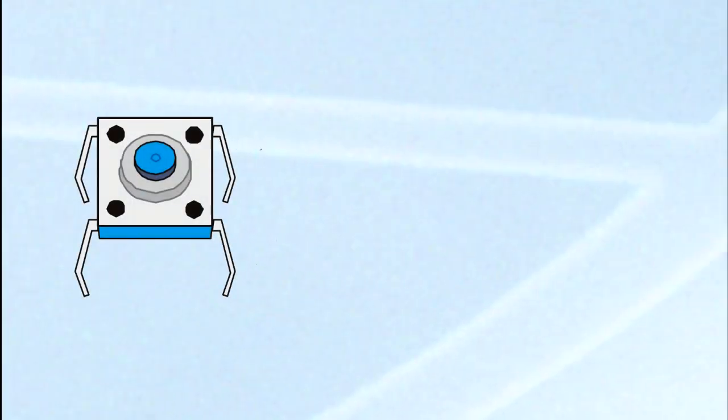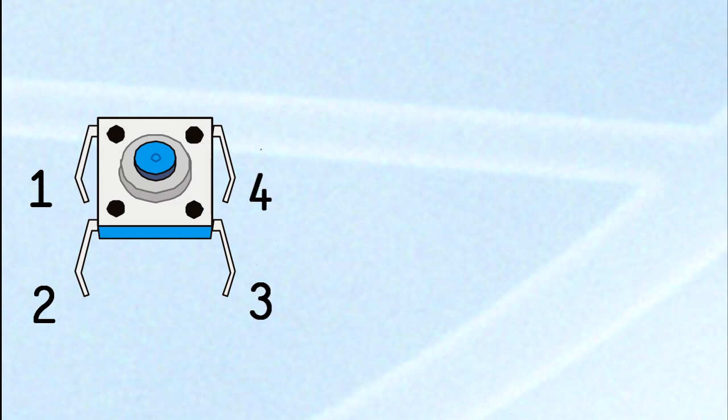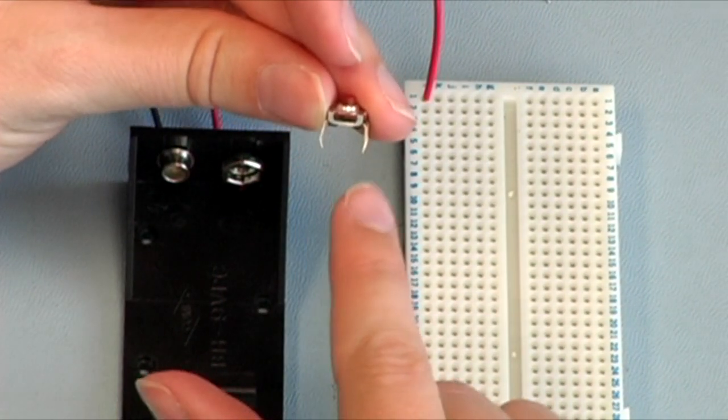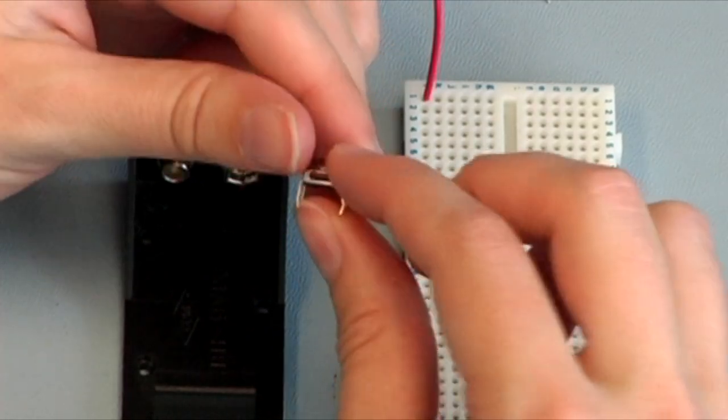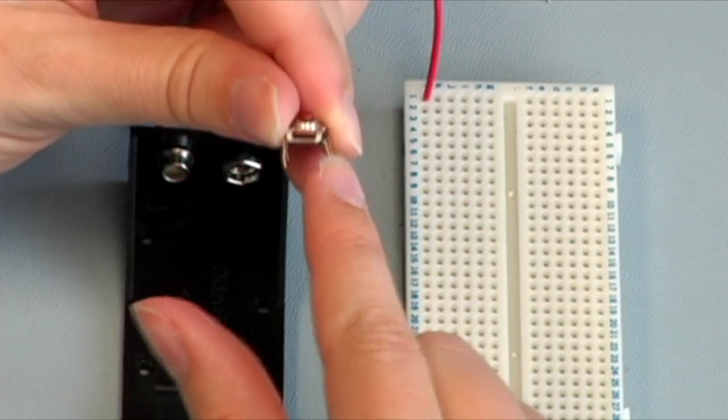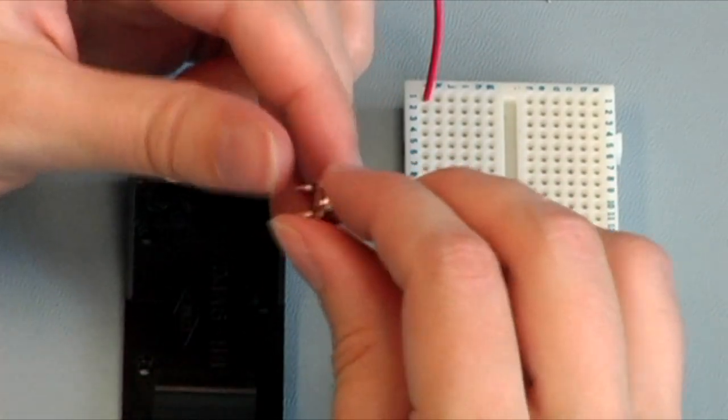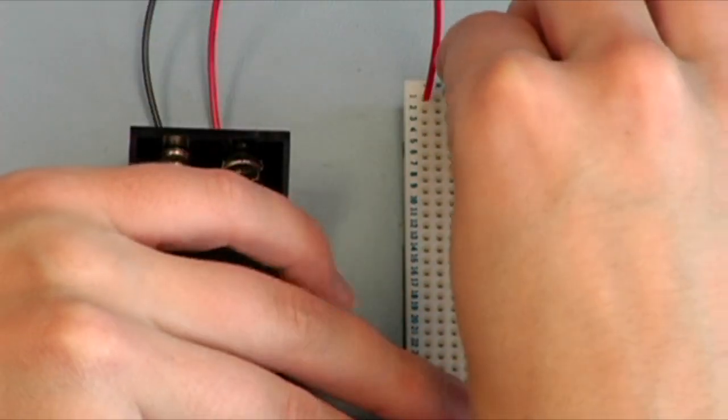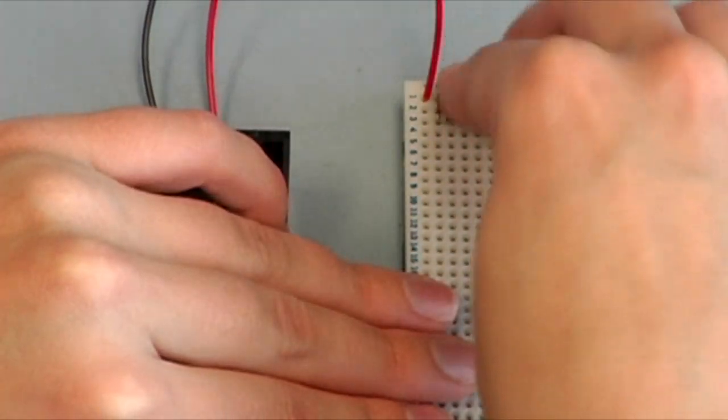You may notice that there are four terminals on the push button, but only two shown in the schematic. That's because these two terminals here and these on the other side are electrically connected. The push buttons don't have polarity, so it doesn't matter which two terminals you choose.